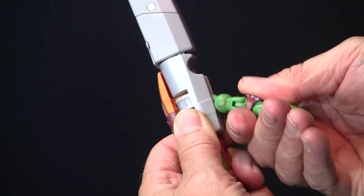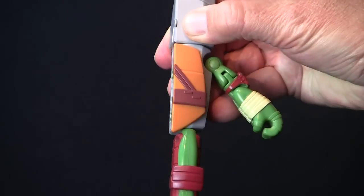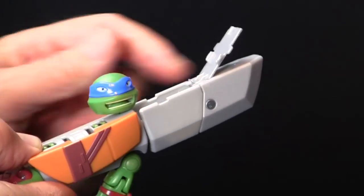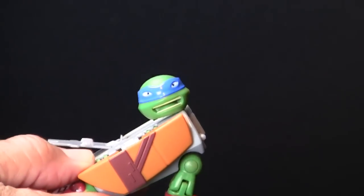Pull out, slide up, and snap in the arm. Slide the shell back. Open the compartment and pull out the head. Fold down and snap into place. Close the compartment.